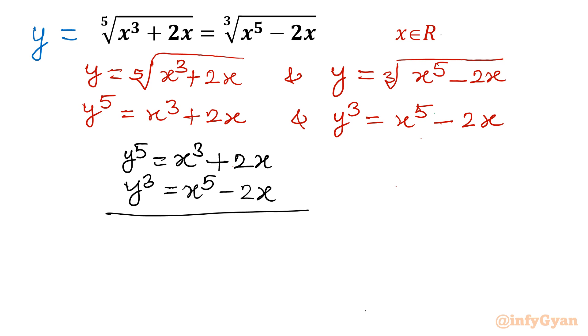Let us add both the equations. So I will write y power 5 plus y cube that would be equal to x cube plus x power 5 plus 2x minus 2x will be cancelled out. Now you can see, from this equation we can conclude that this is only possible when x is equal to y.